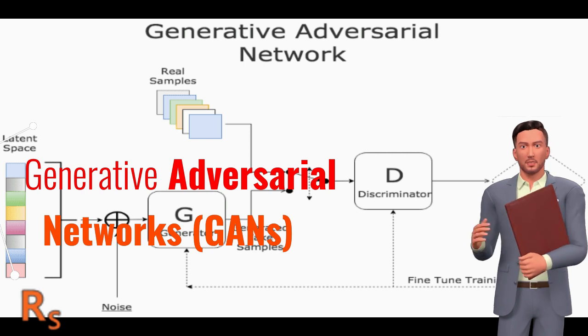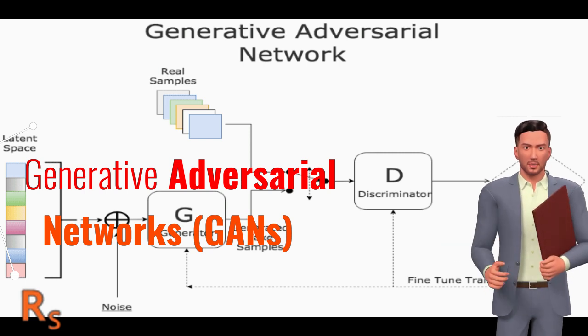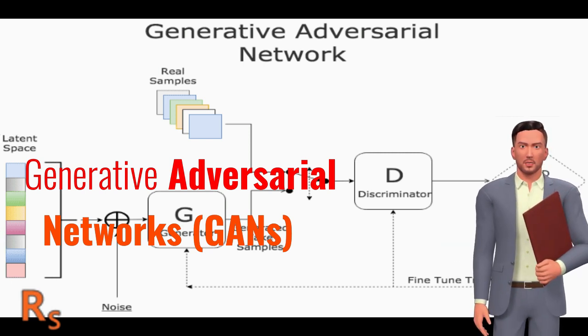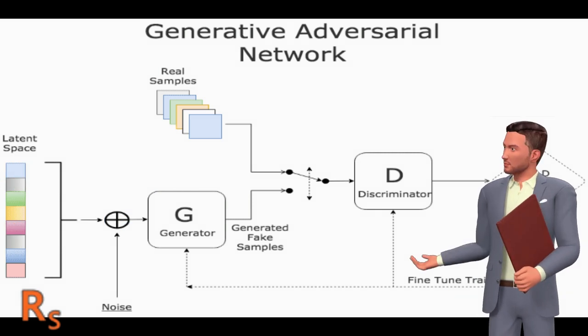Jan LeCun, a deep learning pioneer, has said that the most important development in recent years has been adversarial training, referring to GANs.